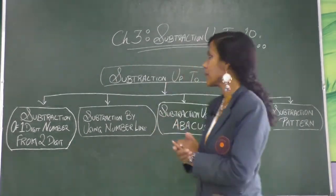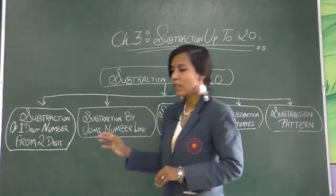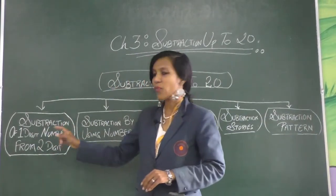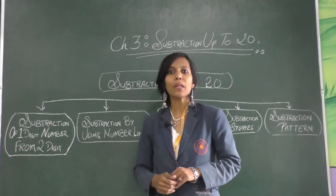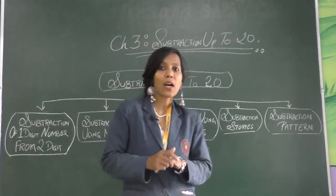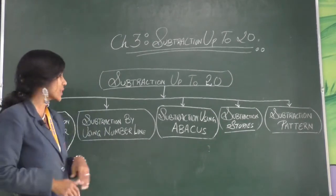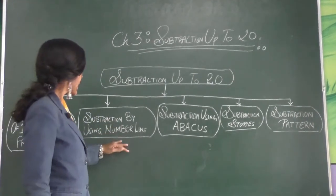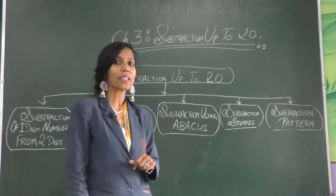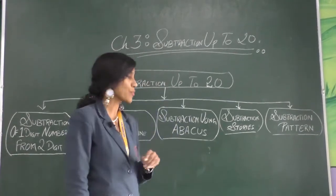Now coming to the mind map for subtraction up to 20. The first topic is subtraction of a one-digit number from a two-digit number — we learned how to do that. Next, subtracting by using a number line, and how we can subtract with the help of a number line.